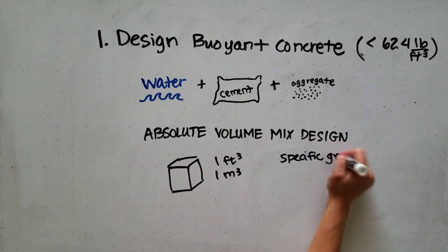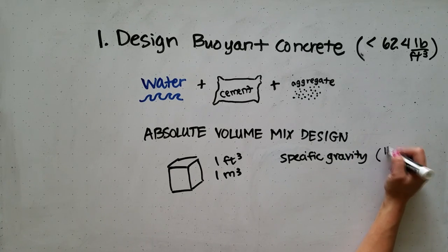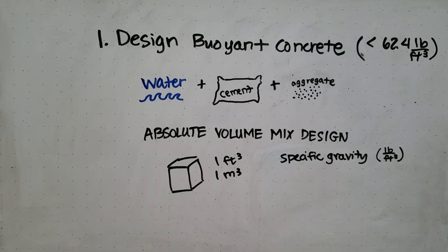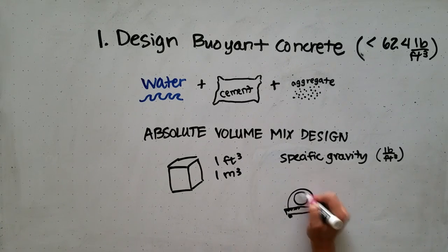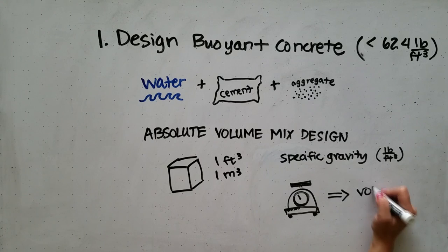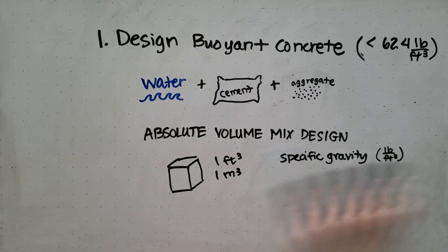It's easier to measure the weight of materials instead of the volume accurately, so we use the specific gravity, which is the weight per unit volume, to determine how much weight should be added of each component to make the correct volume.